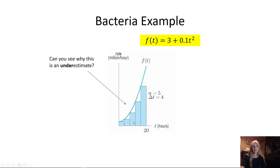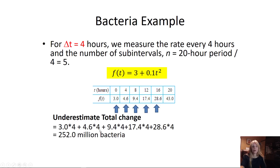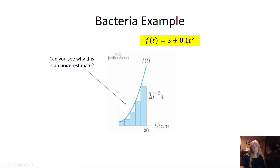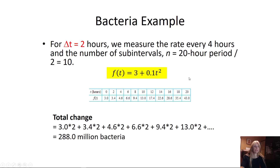For an increasing function, I start at zero, go over to four, come down to get that rectangle, then go up to four, over to eight, come down, and so on. All I'm doing is finding the area of each rectangle — taking the width, which is four, multiplied by the height, which is whatever you plug into your rate function at each t value.